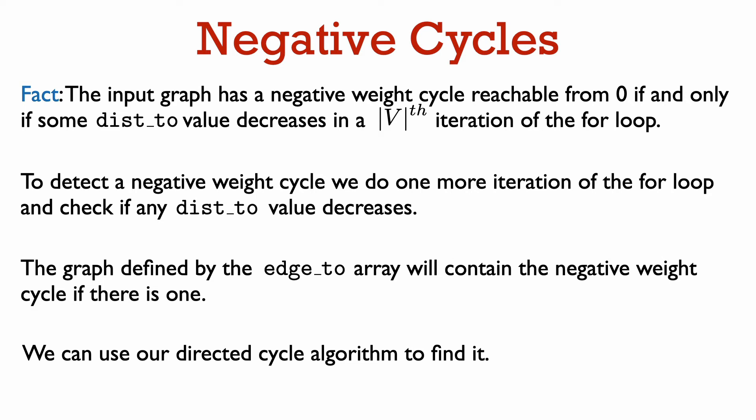This fact lets us easily modify the Bellman-Ford algorithm to detect negative weight cycles. We just do one more iteration of the for loop, so we do the for loop for n iterations total. We check if some dist2 value changes during this last loop. There is a negative weight cycle reachable from the starting vertex if and only if some dist2 value changes in this last iteration. We can also output a negative cycle if there is one — if we detect a negative weight cycle, then the graph defined by the edge2 array will contain this cycle, so we can use our directed cycle algorithm to find it.